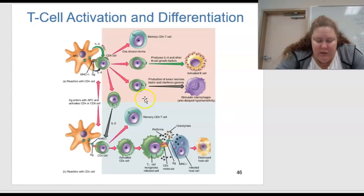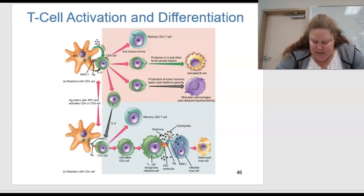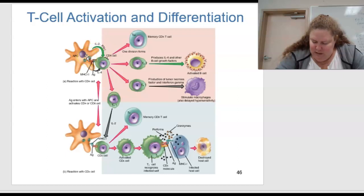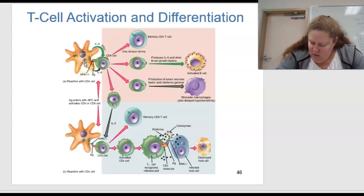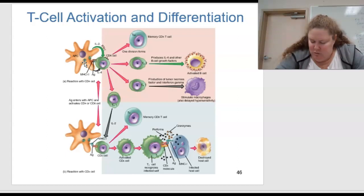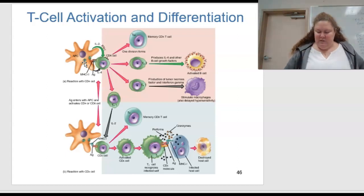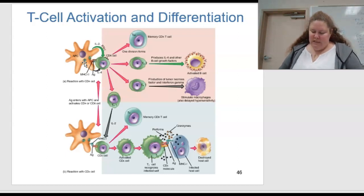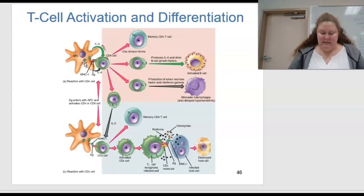The CD4 cells bind to the antigen MHC2 complexes on the APCs. Depending on the type of cytokine released from the APC, they either become Th1 or Th2 cells. The Th1 cells synthesize IL-2 interleukin-2, which activates CD8 cells and causes macrophages to destroy ingested microbes or become more cytoactive. The TH2 cells secrete cytokines that enhance B cell activation.